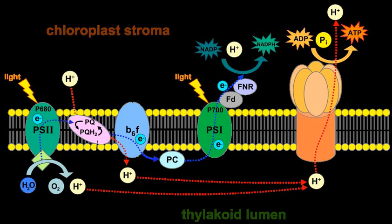In bacteria, the special pair is called P760, P840, P870, or P960. P here means pigment, and the number following it is the wavelength of light absorbed.